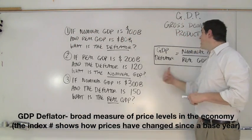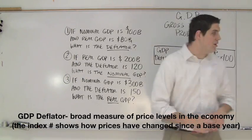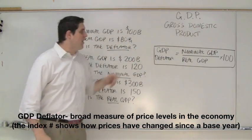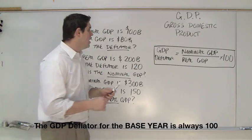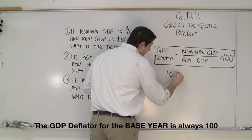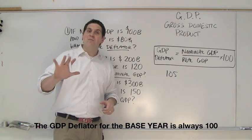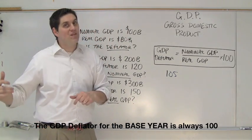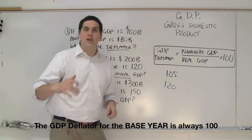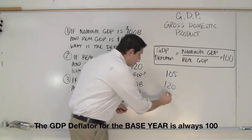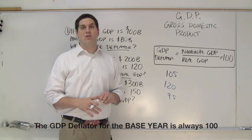I've got three questions for you. I'm even giving you the equation for calculating the GDP deflator: GDP deflator is nominal divided by real times 100. It's going to give you a number — for example, 105. A GDP deflator of 105 means prices have increased 5% since the base year, not the previous year. A GDP deflator of 120 means prices increased 20% since the base year. And a GDP deflator of 95 means prices fell 5% since the base year.